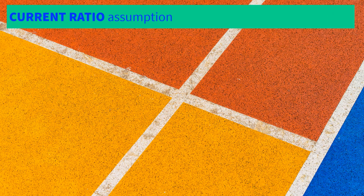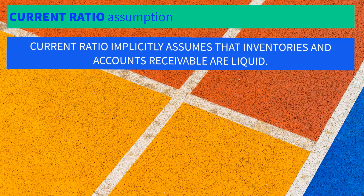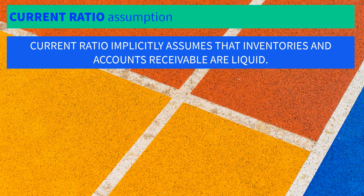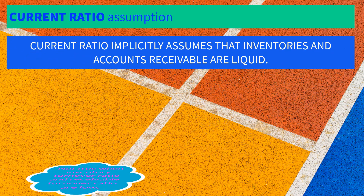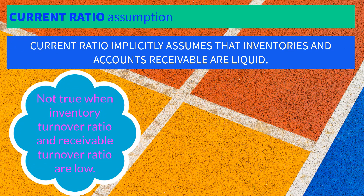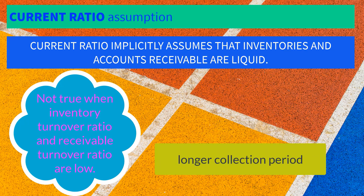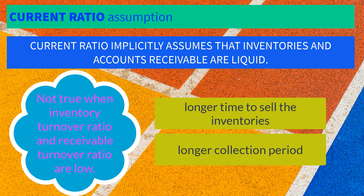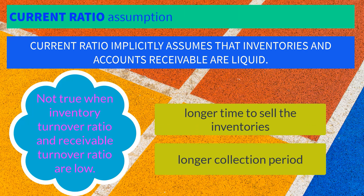The current ratio implicitly assumes that inventories and accounts receivable are liquid, which is presumably not true when the related turnover ratios are low — meaning more time for receivables to be collected and more time for inventories to be sold.